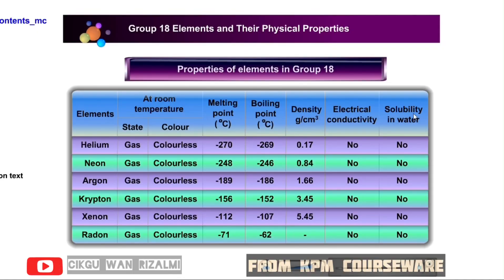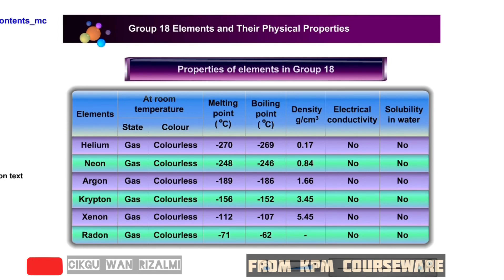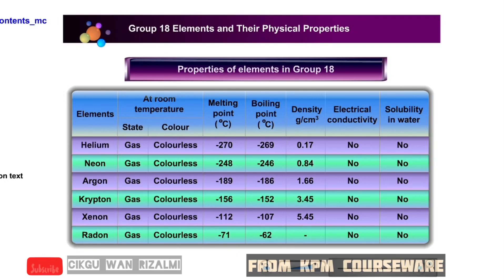Properties of elements in group 18. Look at the table. You have learned about the general physical properties of group 18. Based on the table, can you observe the changes in the physical properties as we go down the group? Click on the blinking button to proceed.